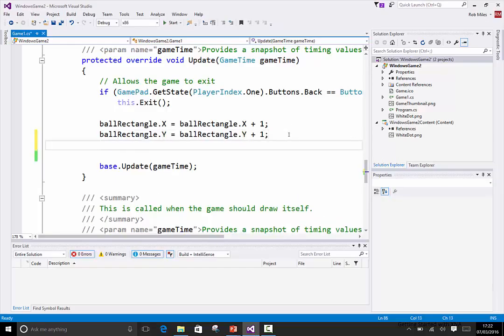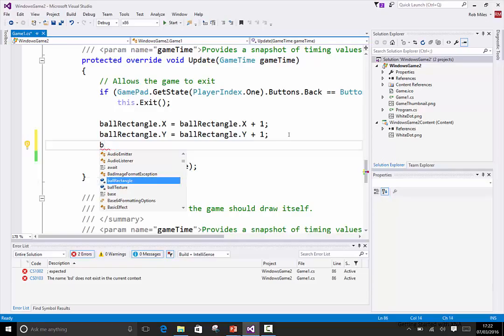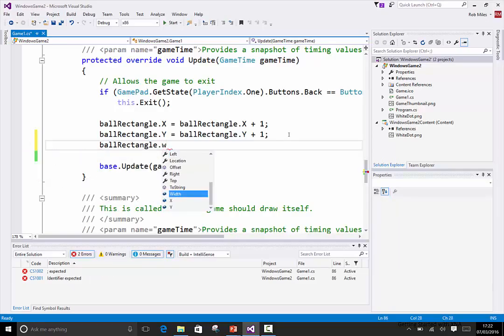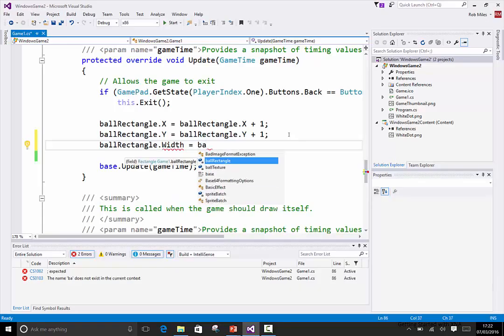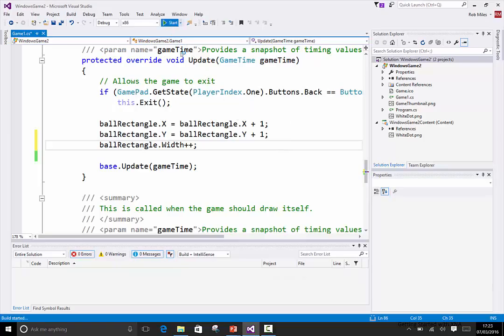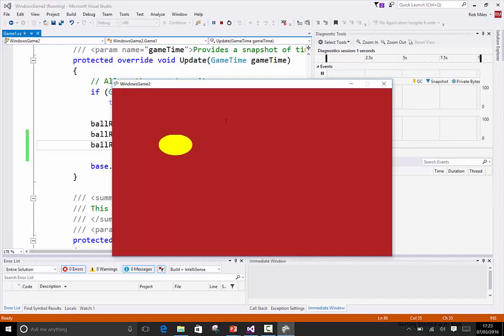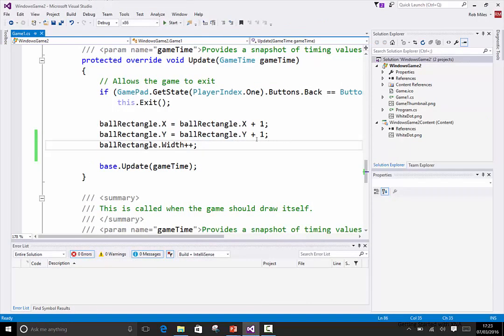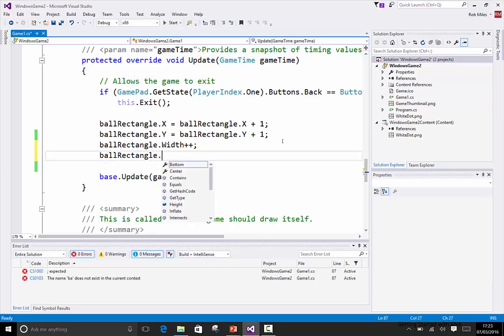So you can have fun with this. It's ball rectangle dot width equals ball rectangle, let's do the plus plus because plus plus means make it one bigger. And then so now what it'll do is it'll, well, that's what it does do. It goes, which is quite fun. And so one of the things, one of the effects you can get if you do the same thing with the height.